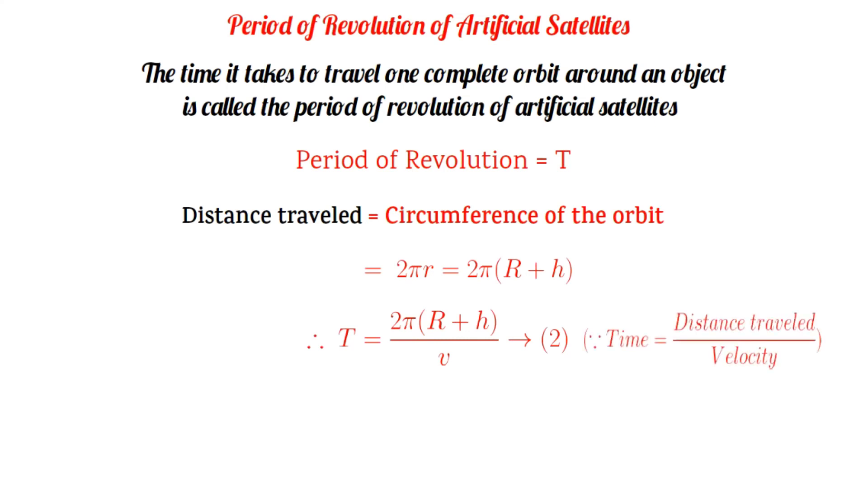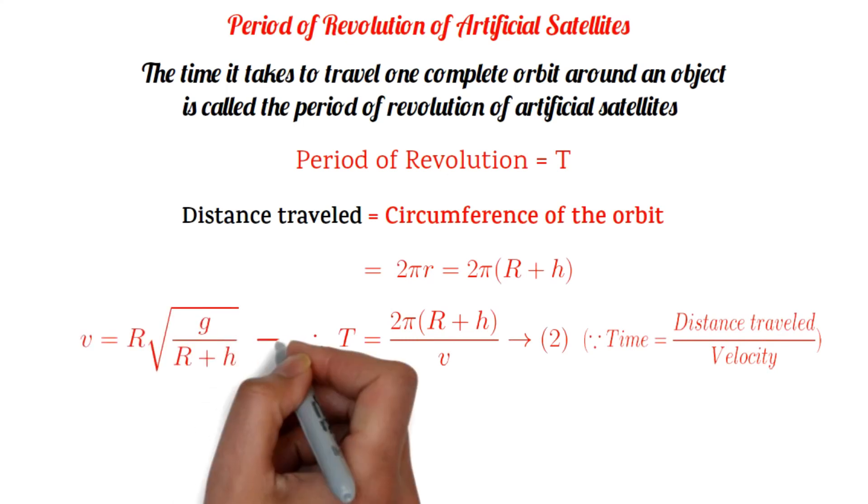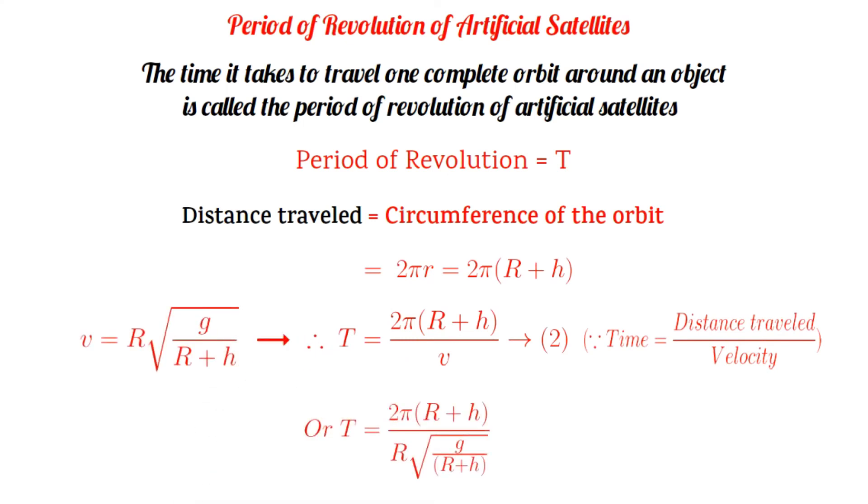Now substituting the value of v in equation number 2, and after solving we get capital T equals 2π by capital R into root over capital R plus h whole cube by small g. This is the formula for the period of revolution of artificial satellite.